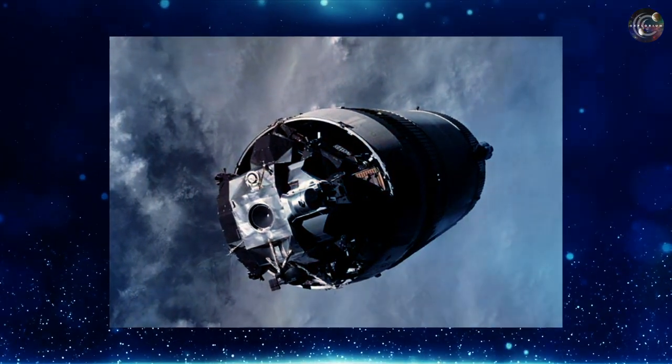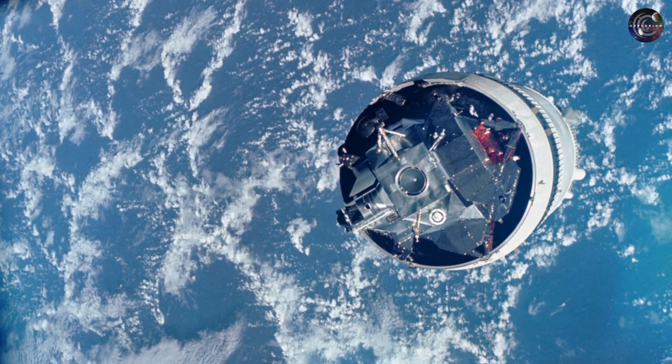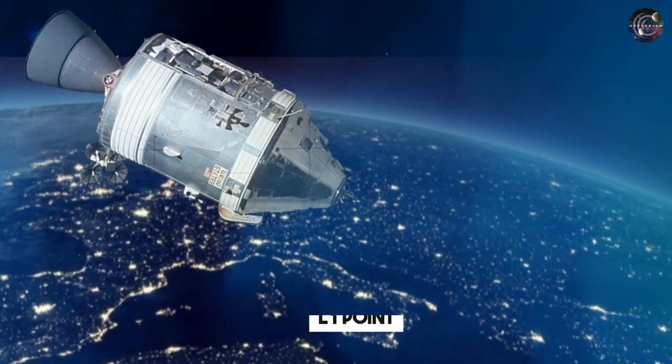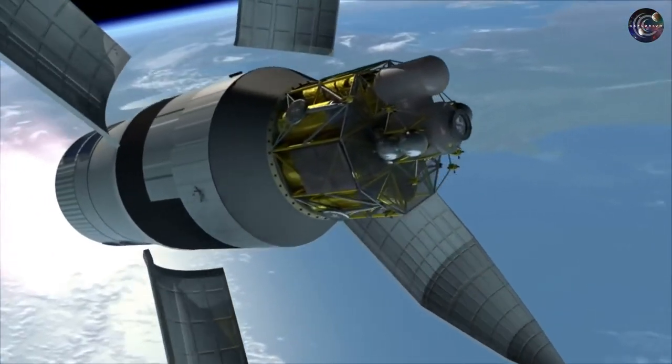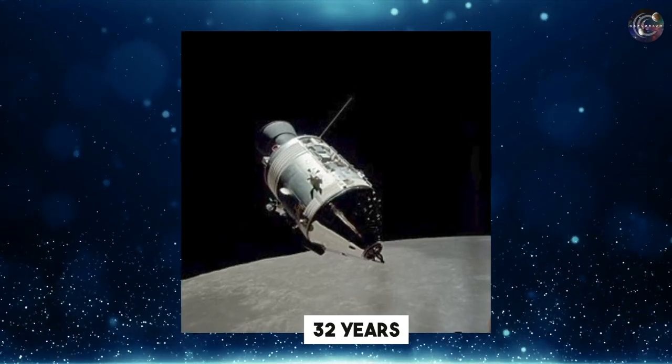The third stage attained its apoapsis in 2002, just before the Earth appeared in the picture. This time, the third stage passed beyond Earth's L1 point and the Earth suddenly had a greater attraction to the object than the Sun for the first time in 32 years.